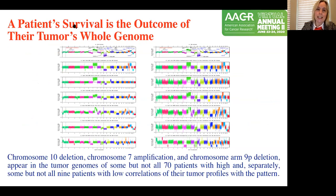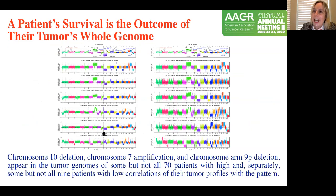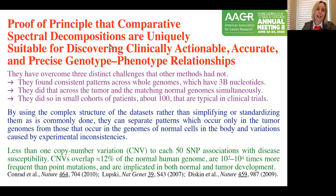I want to emphasize that the patient's survival is the outcome of their tumor's whole genome, not just parts of the genome. Take chromosome 10 deletion: we see it in the tumor profile most correlated with the pattern, but we also see it in the tumor profile among the least correlated with the pattern, classified in the low-correlation group that has longer median survival. This is a proof of principle that those comparative spectral decompositions are suitable for discovering clinically actionable, accurate, and precise genotype-phenotype relationships.